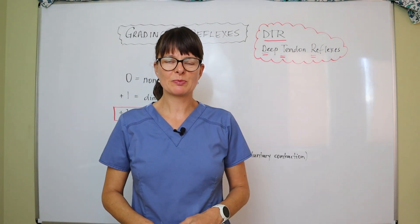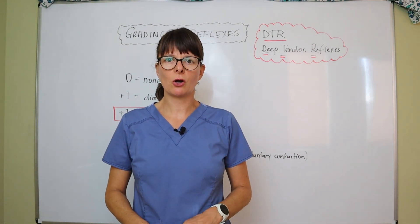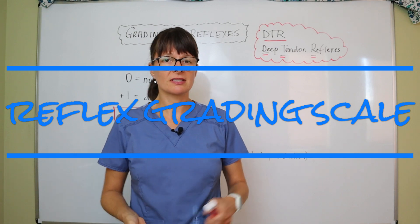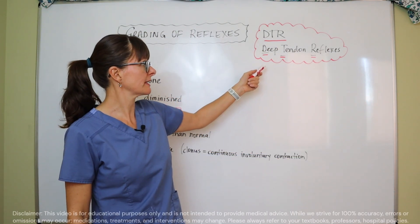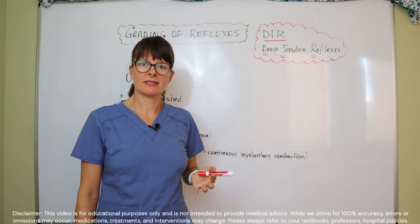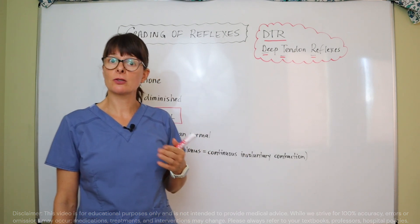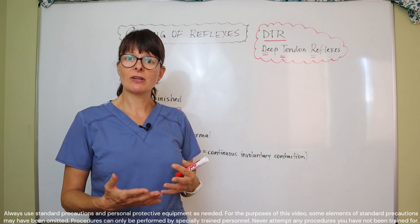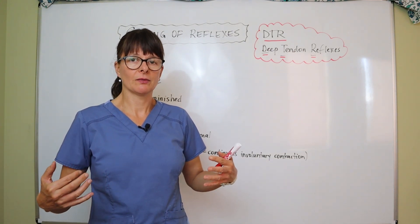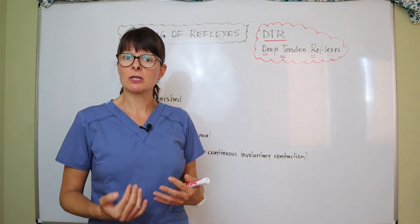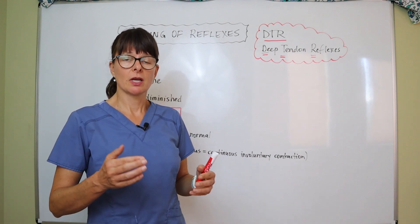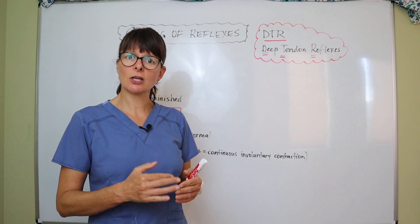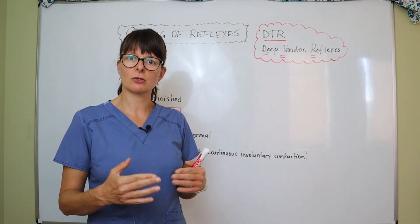Welcome to Nursing School Explained. In this video on the grading of reflexes, or DTRs — deep tendon reflexes — we discuss why we assess reflexes. That usually has something to do with the patient's neurologic system, because a reflex is an involuntary muscle contraction. We somehow stimulate the tendon, which then causes the adjacent muscles to contract.